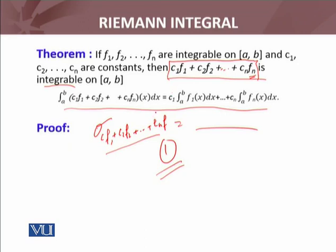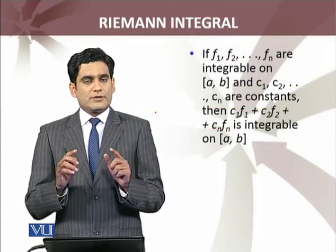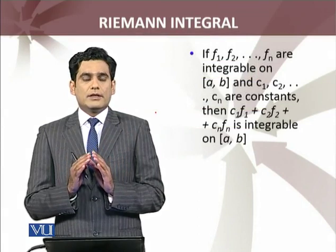So if f1, f2, and so forth fn are integrable, then c1, c2, up to cn जो हैं, ये constants हैं।